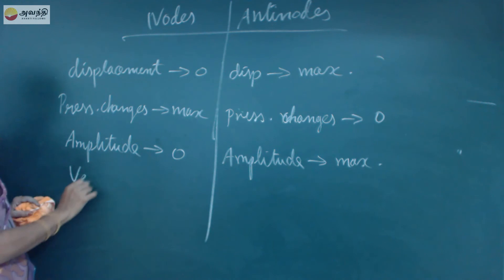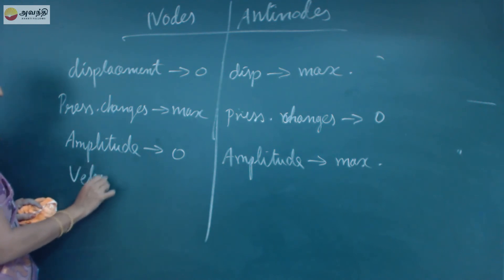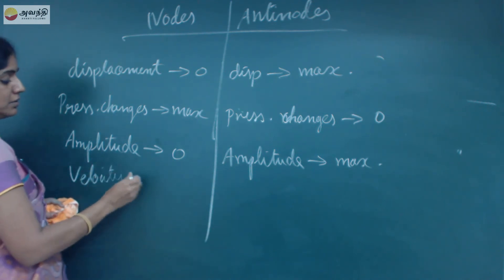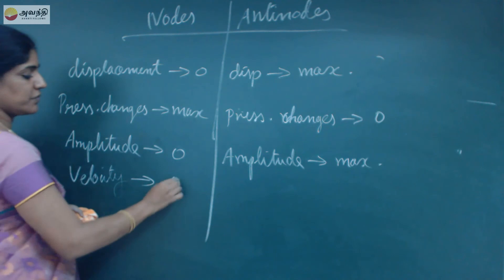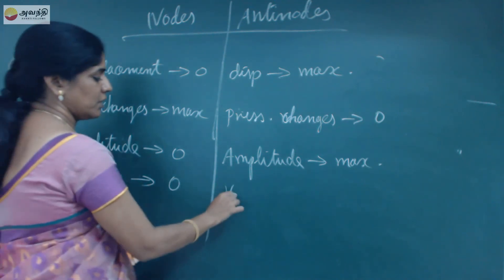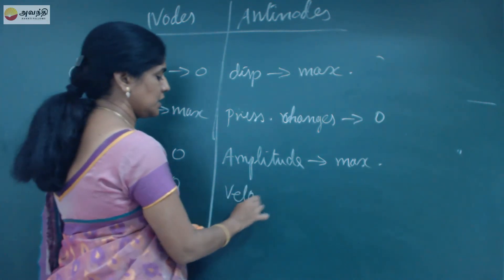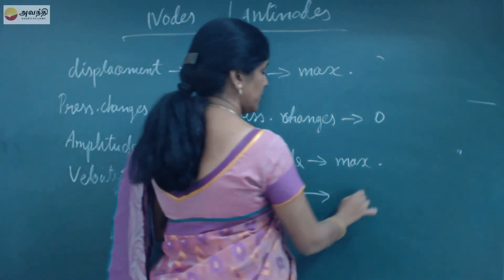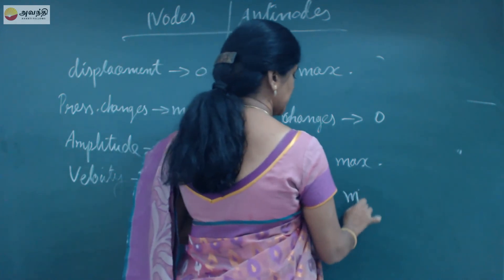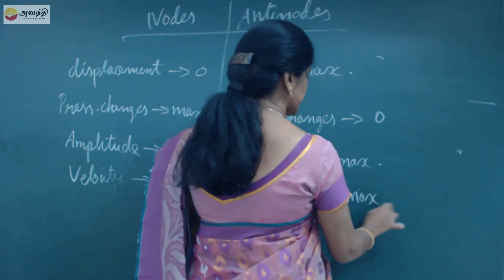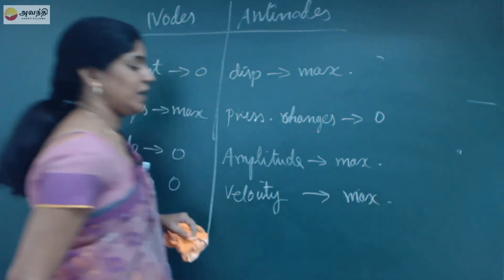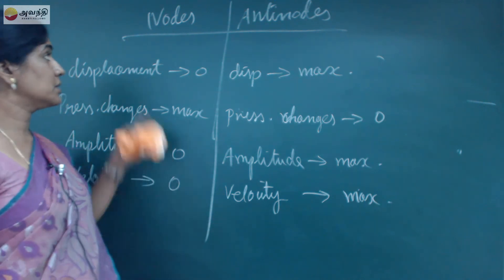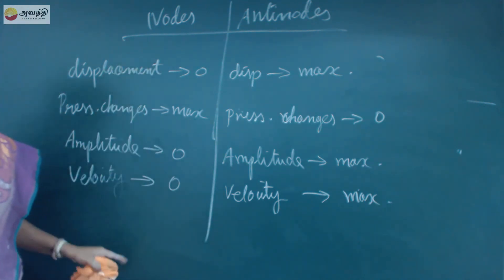Then, looking at velocity: the velocity at the nodes will be 0, and the velocity at the anti-nodes will be maximum. So velocity is 0 at nodes and maximum at anti-nodes.